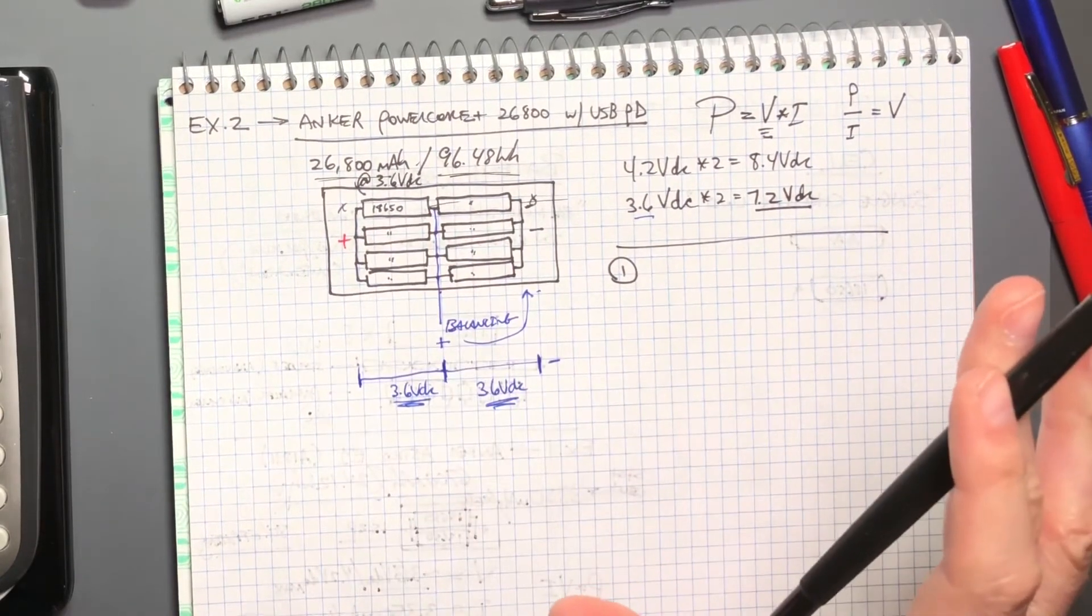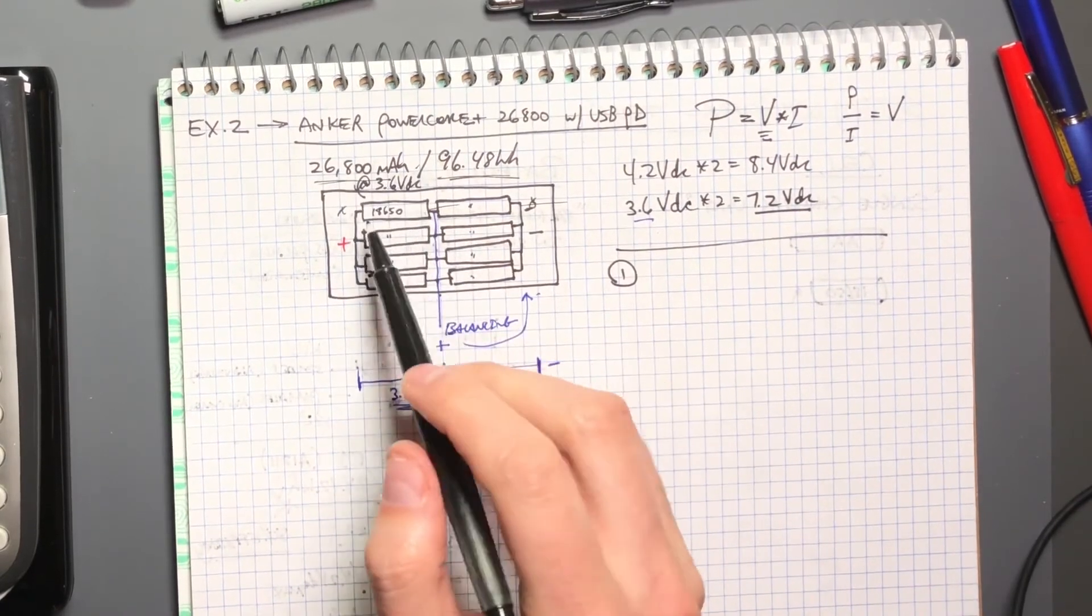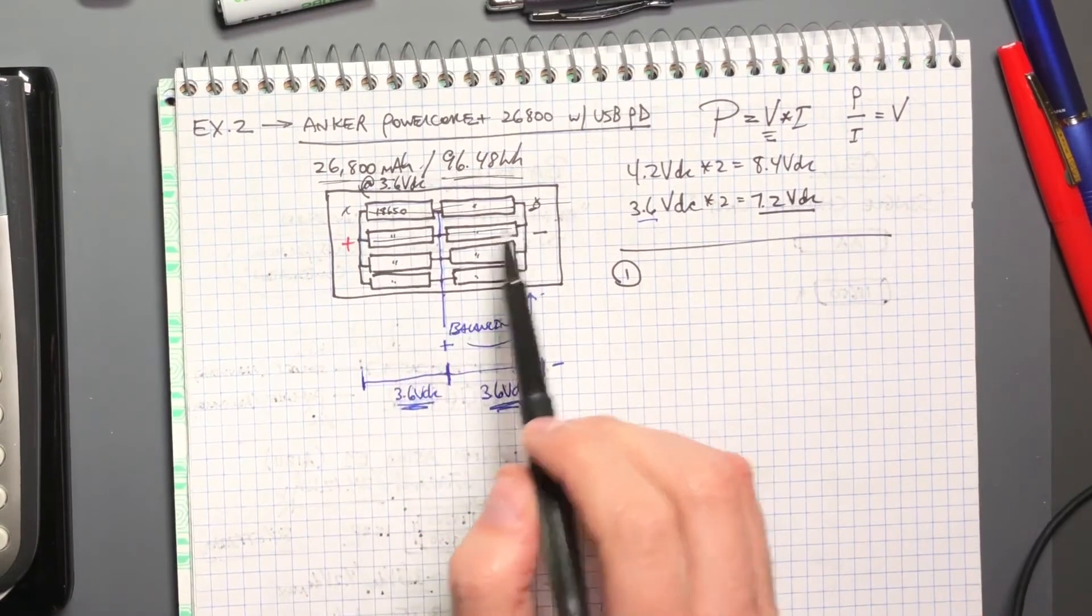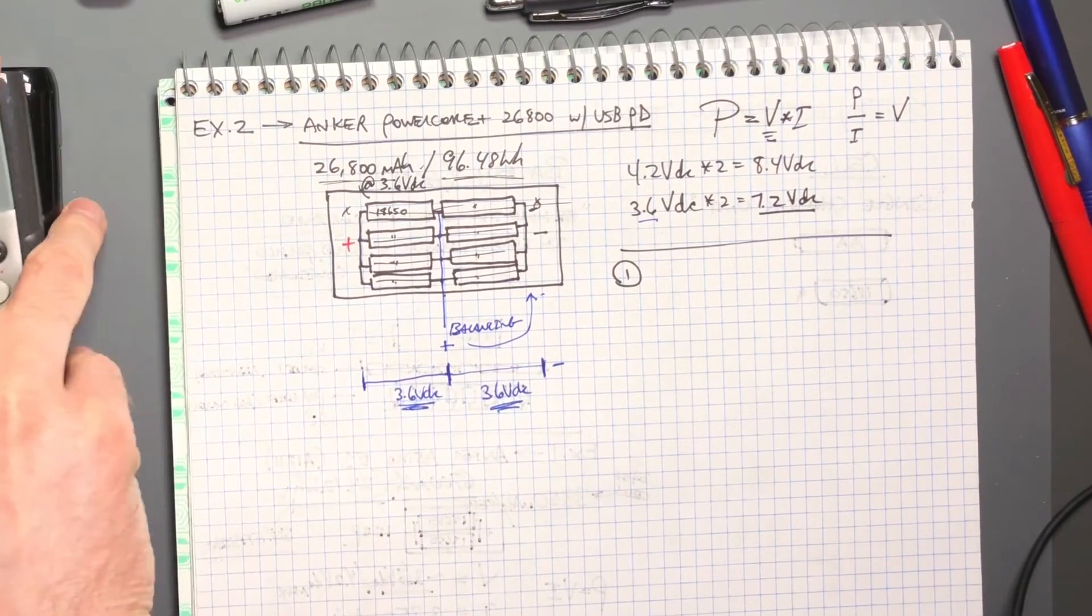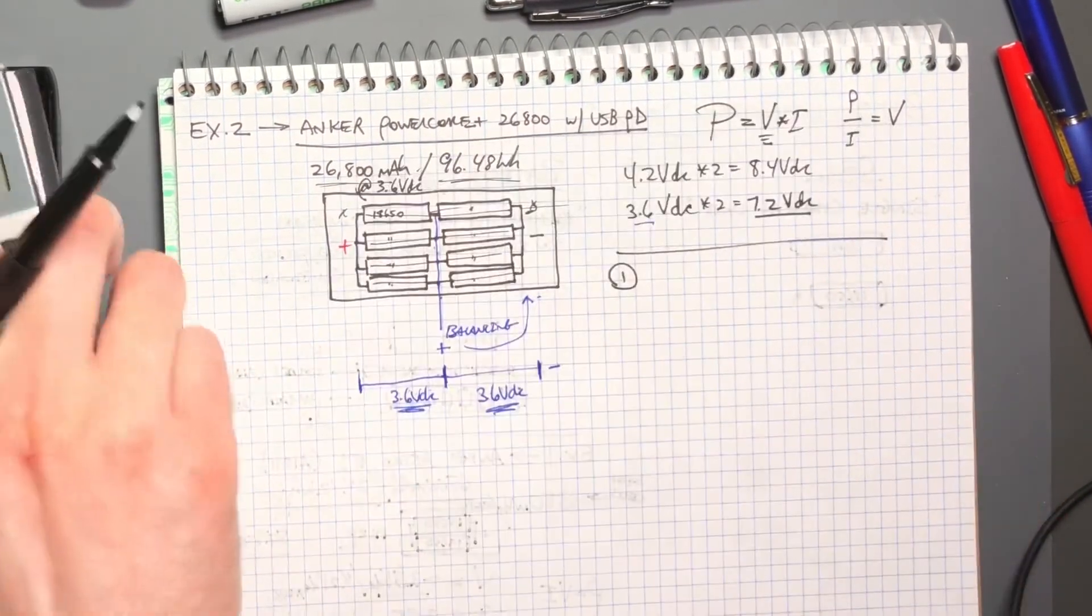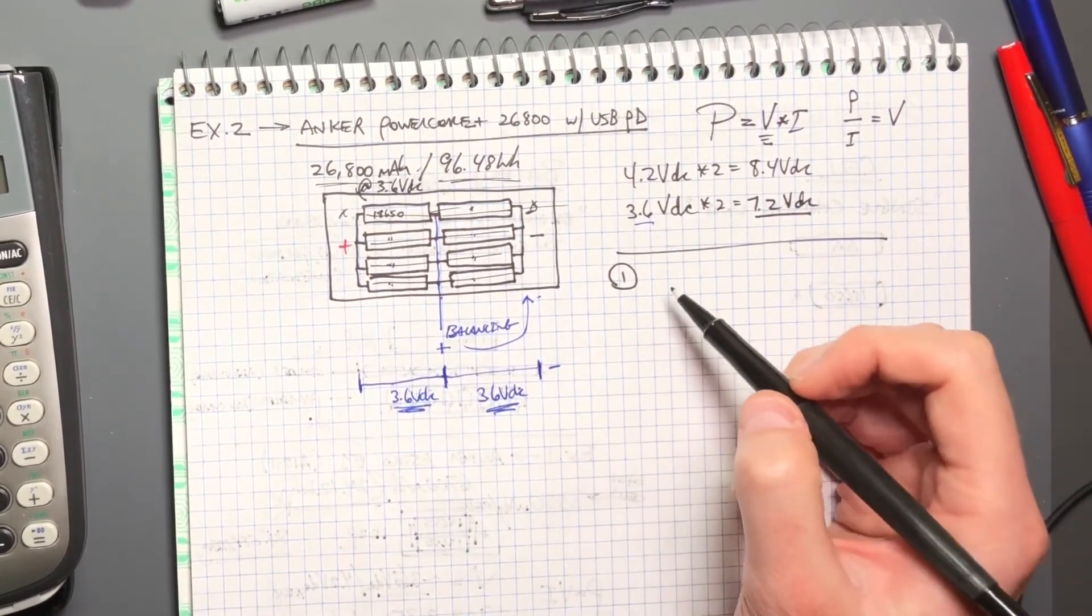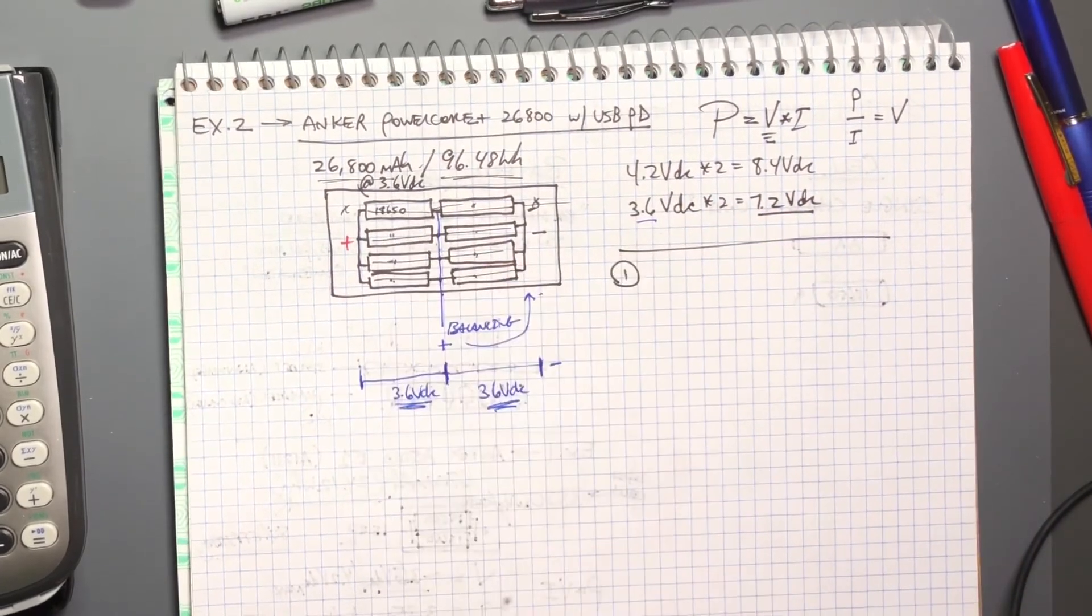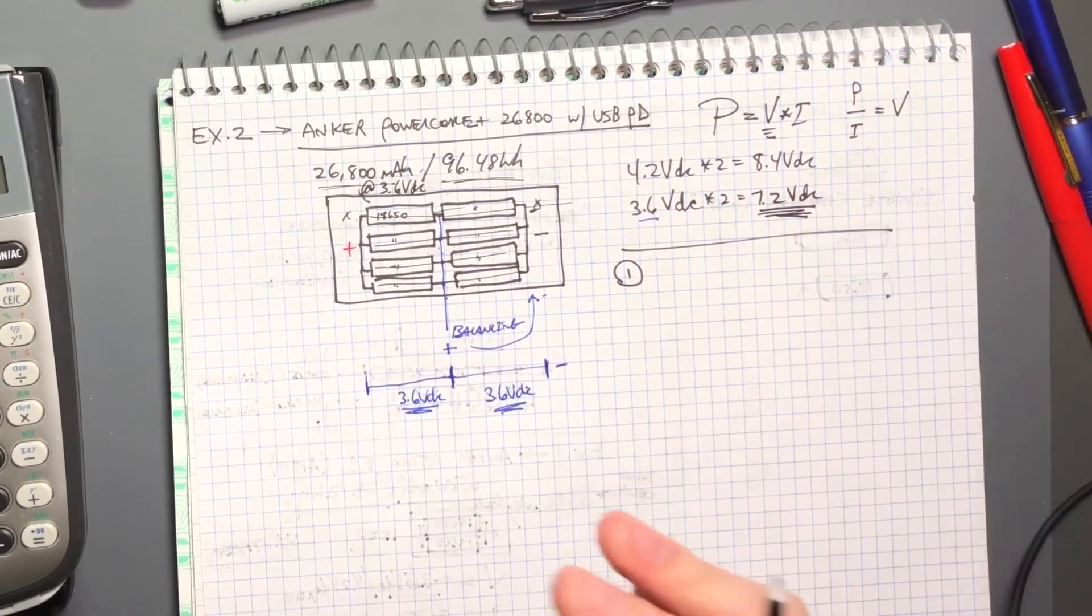So when you look at the pack like this, and it's not in parallel only, where you can simply add up the current, you have to treat this as the current capacity at a particular voltage. Otherwise, the math won't work. And what you'll end up getting is, if you go, I'm not looking at this voltage, you go, okay, this is 3,350, 3,350, 3,350, 3,350, and multiply that together. So you get 3350 times four, which would give you 13,400 milliamp hours, which would be incorrect, because it assumes it assumes the pack voltage is at 3.6 volts, which it's not, we already said and measured in that previous video that it was at 7.2 volts or 8.4 volts peak.